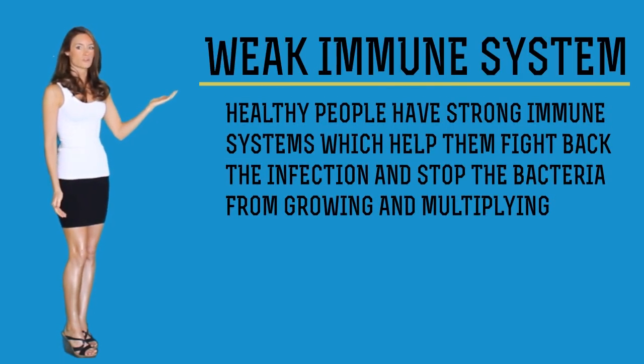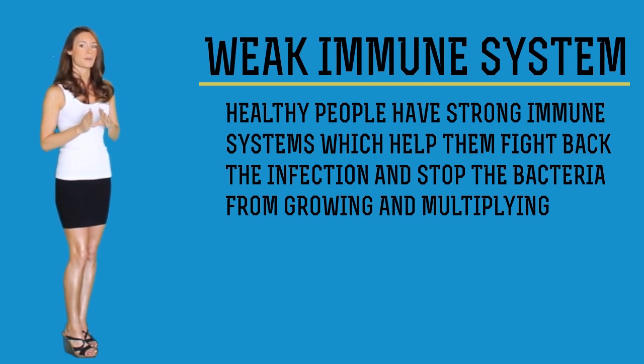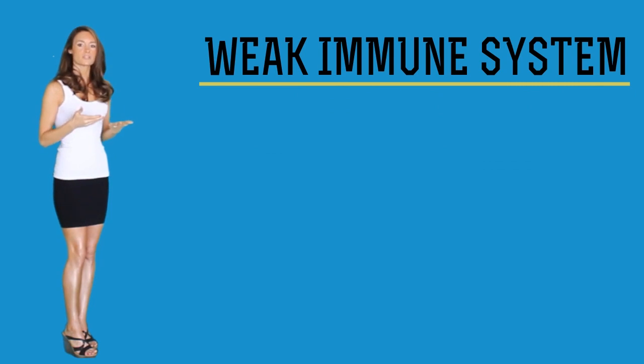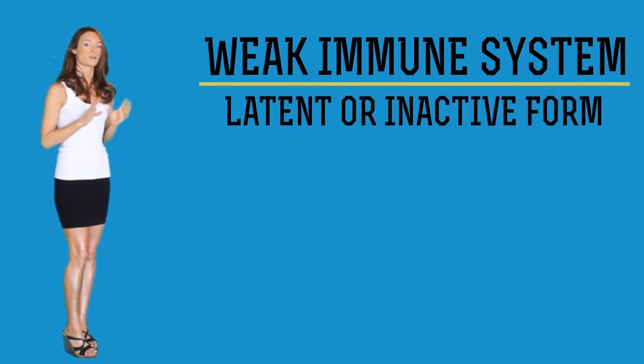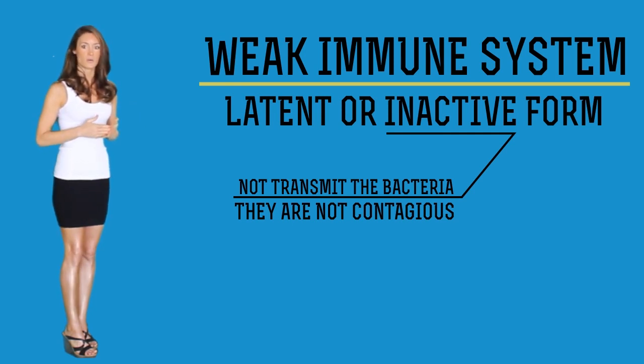Certain factors increase the risk of contracting TB, such as a weak immune system. Healthy people have strong immune systems which help them fight back the infection and stop the bacteria from growing and multiplying, so they are less prone to diseases such as TB even when infected. When such an individual has TB, it is known as the latent or inactive form. In the case of a person with an inactive form of TB, the infected individual does not transmit the bacteria to others as they are not contagious. But their disease can grow anytime if their immune system becomes weak — due to conditions like diabetes, cancer, HIV, malnutrition, or if the person is too young or too old — in which case the bacteria can grow and multiply.